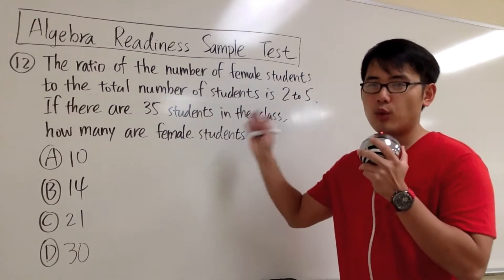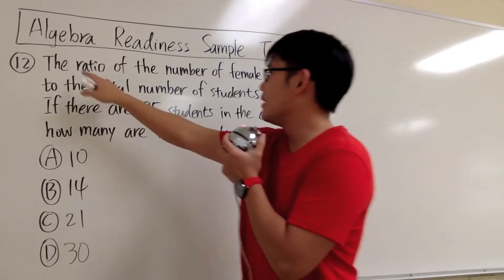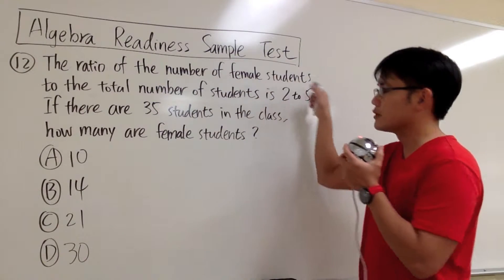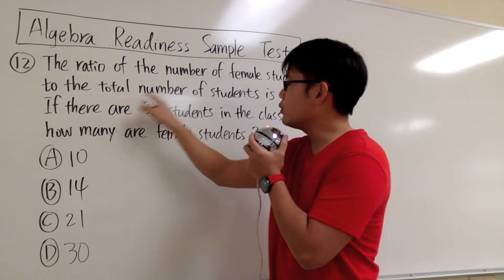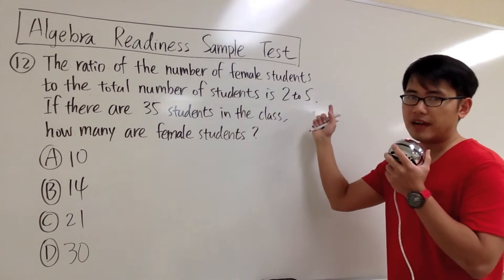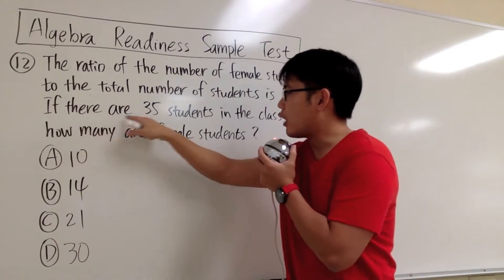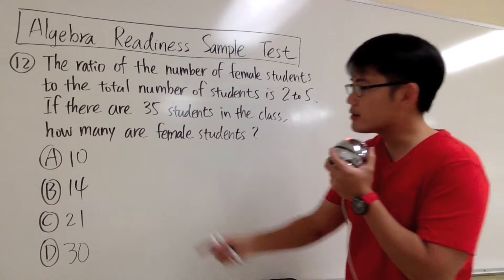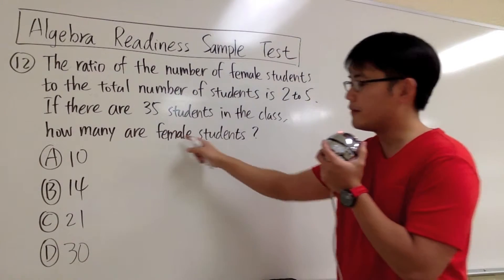Let me show you how we can break down this word problem. Number 12: the ratio of the number of female students to the total number of students is 2 to 5. We know there are 35 students in the class, and we're trying to find out how many are female.